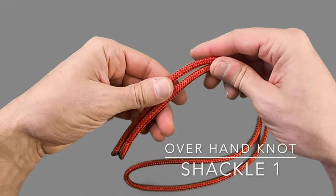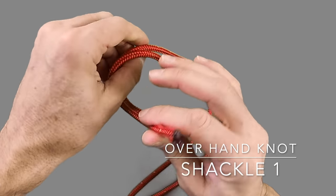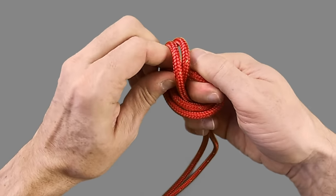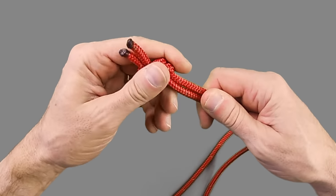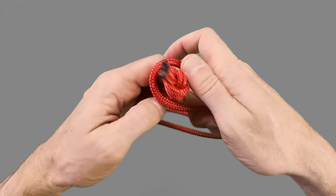The first shackle is made by simply creating an overhand loop knot with the loop taking up 95% of the rope width, only leaving a small tail.